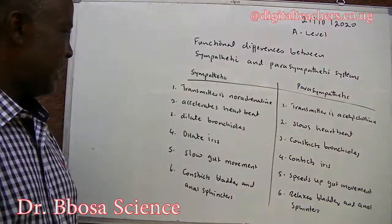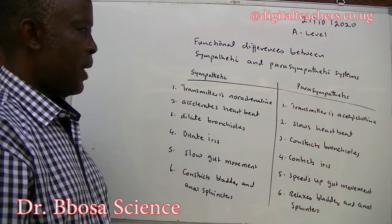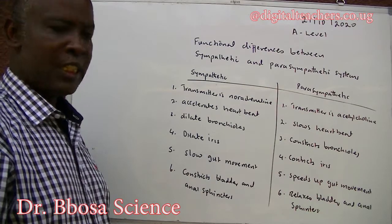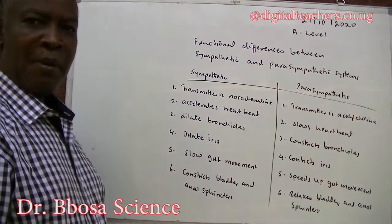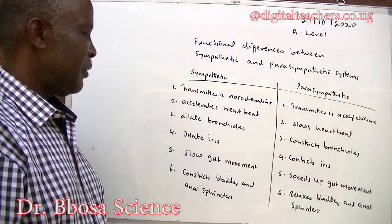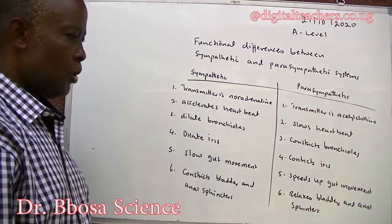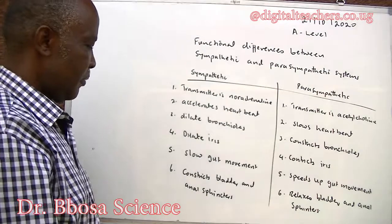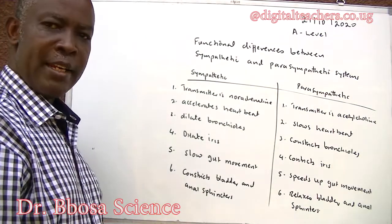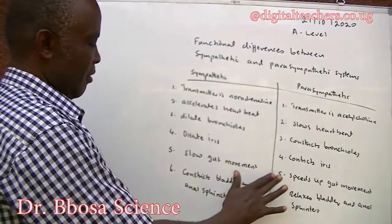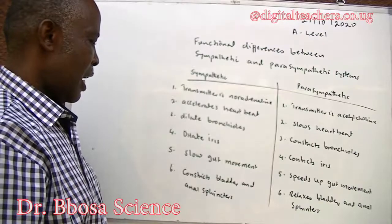The sympathetic dilates the bronchioles; the parasympathetic constricts the bronchioles. The sympathetic dilates the iris; the parasympathetic constricts the iris. The sympathetic slows gut movement, while the parasympathetic speeds up gut movement.